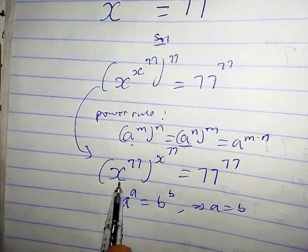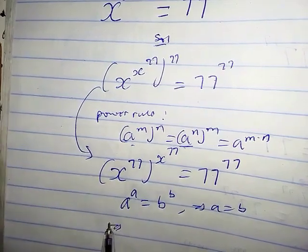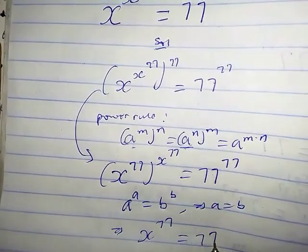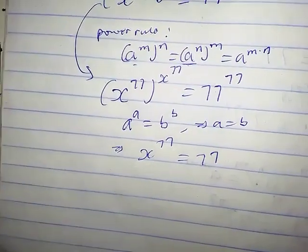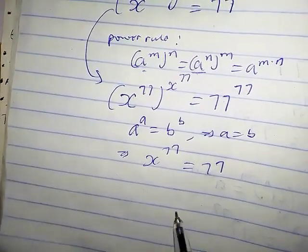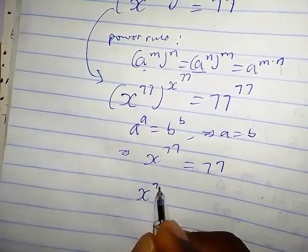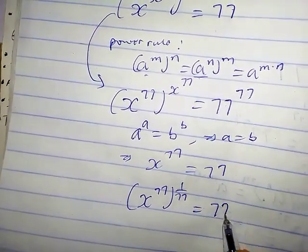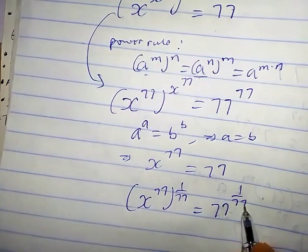So by comparison, we're going to have, so this implies x raised by 77 equals 77. So let's multiply both exponents by 1 over 77. So we're going to have x raised by 77 times 1 over 77 equals 77 raised by 1 over 77.